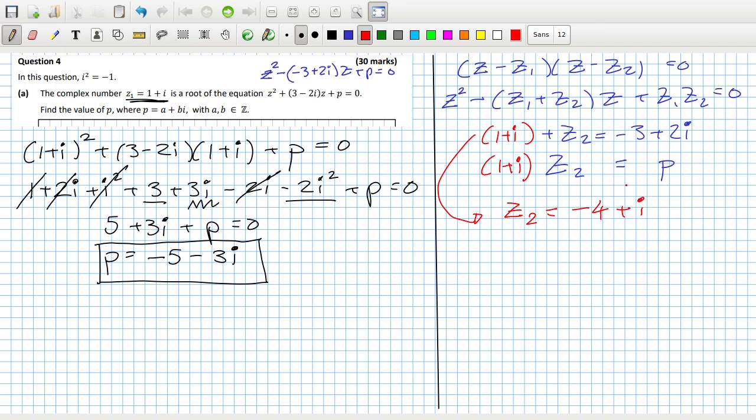And so you can get the p. The p is going to be z1 times z2, which is (1 + i) times (-4 + i). Hopefully I get the same answer. That's -4 plus i minus 4i plus i squared. i squared is minus 1, -4 minus 1 is -5, and 1i minus 4i is -3i. So there you go.